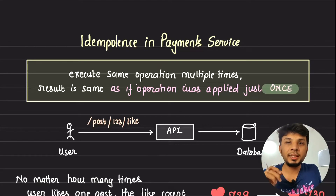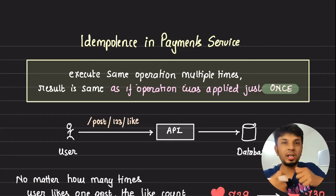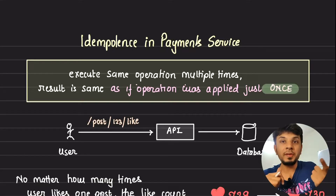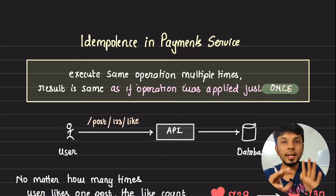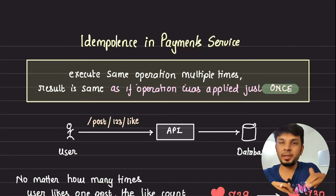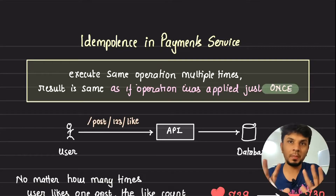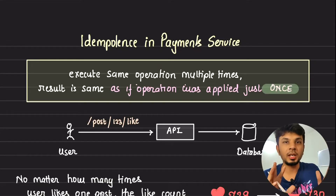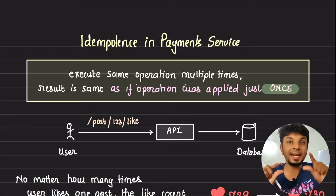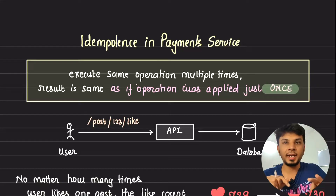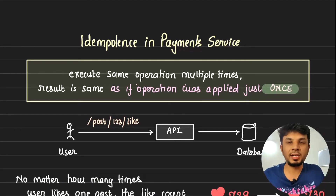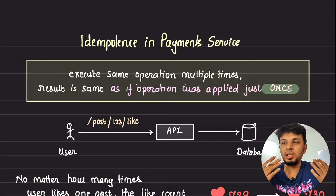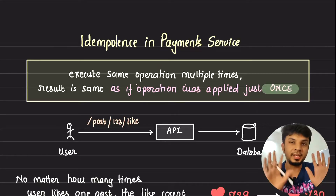Idempotency is one of the most critical things to consider while designing an API or a microservice. In this video I'll walk you through what idempotency is, why we need it, and more importantly take a look at an approach of implementing idempotency. There are multiple ways of doing it, and I've talked about one good common approach, but obviously it's very subjective and depends on the problem statement you have.